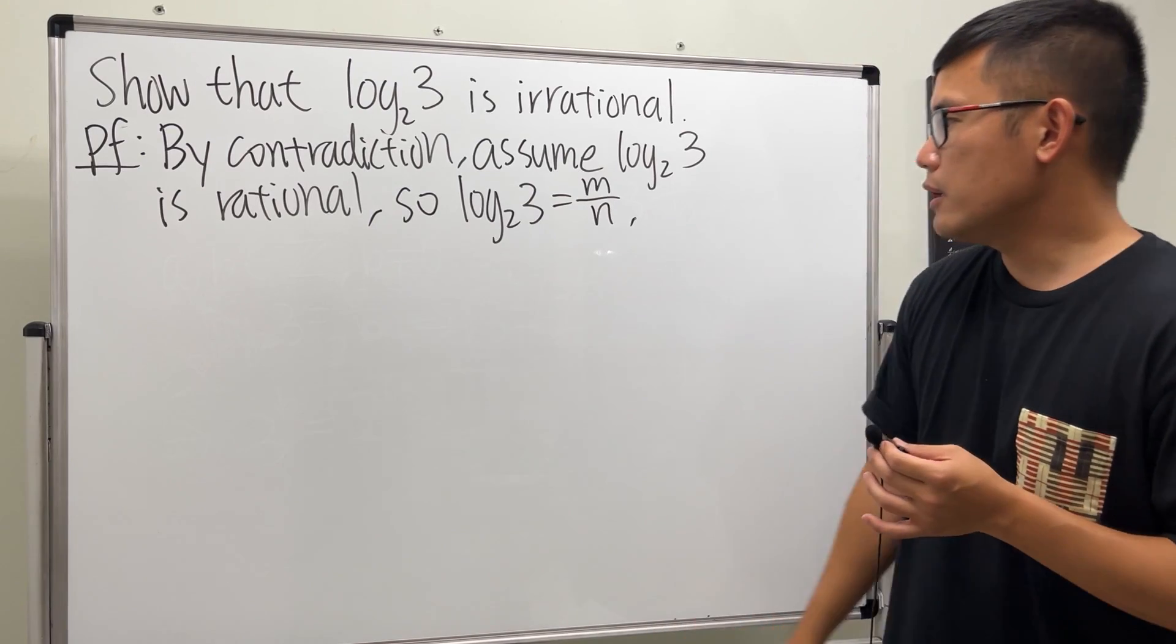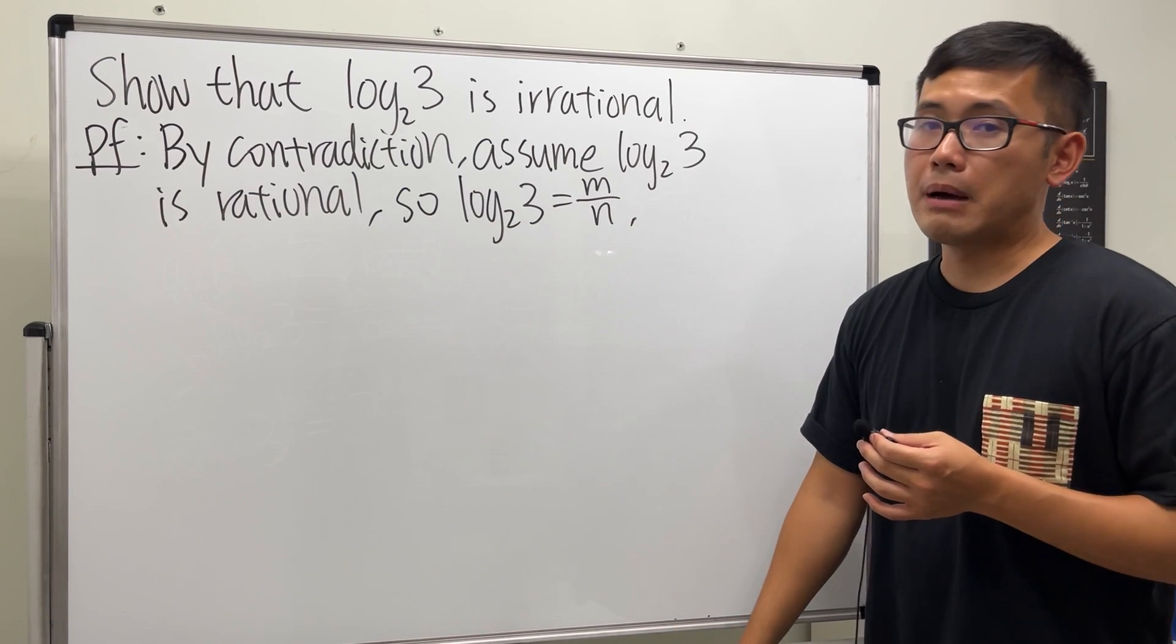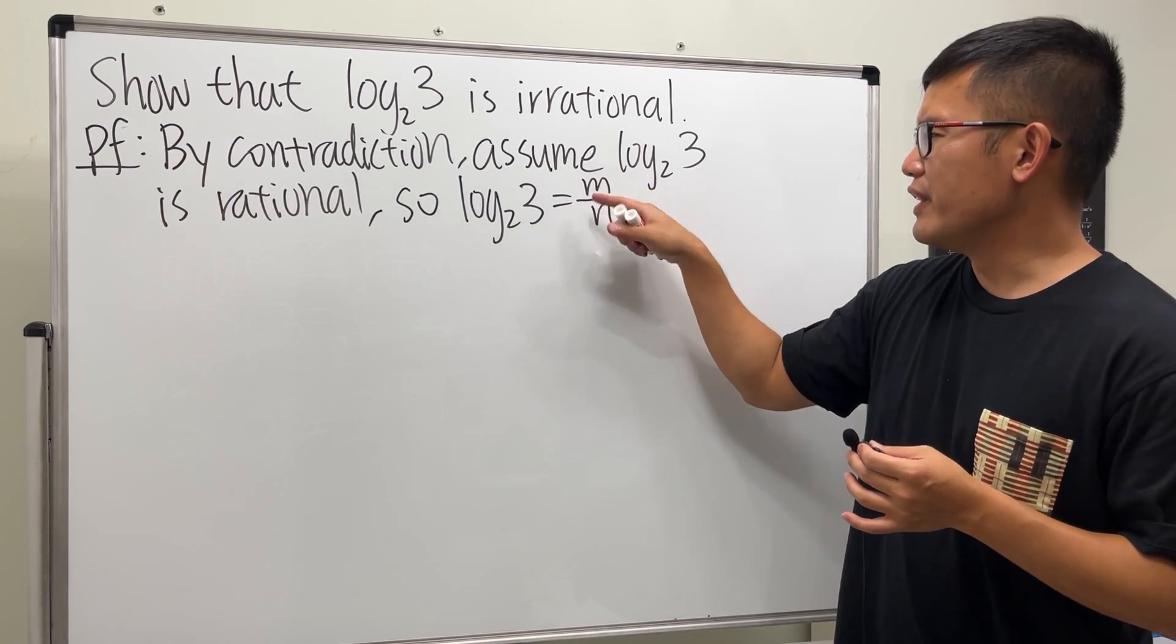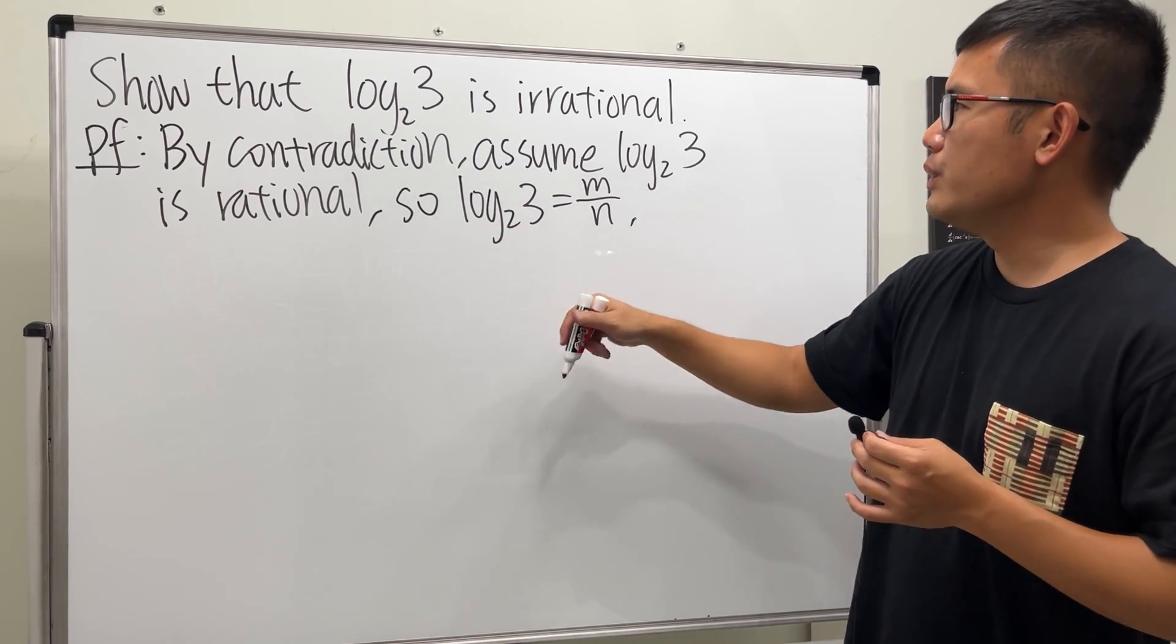And right here I'm just going to assume that without loss of generality, m and n are both positive. Because if they are both negative, you can just cancel them out, and then clearly you can see that this right here is positive because the input is bigger than the base.